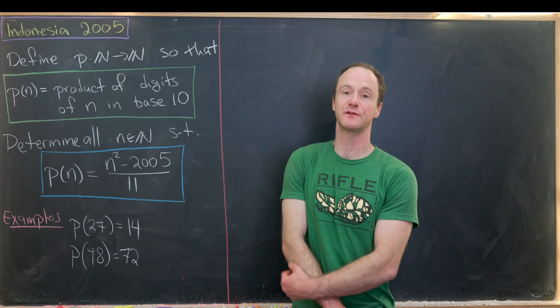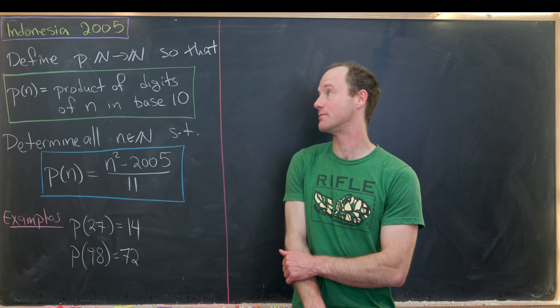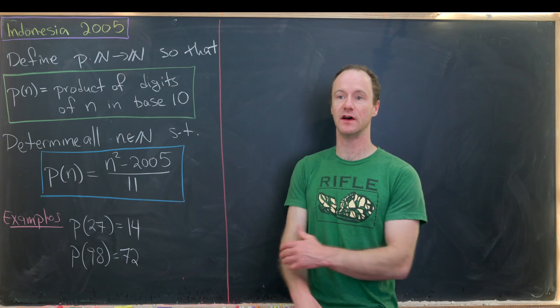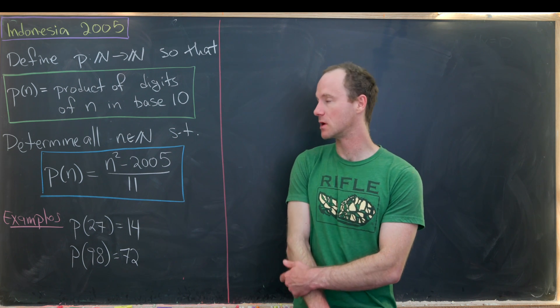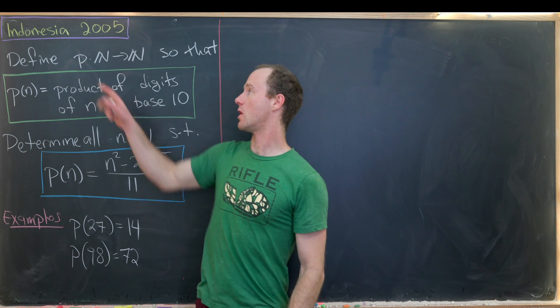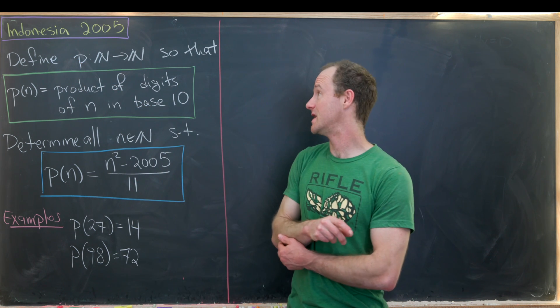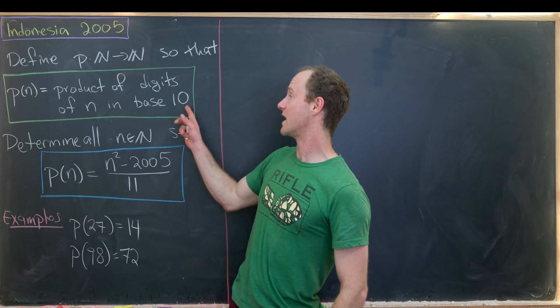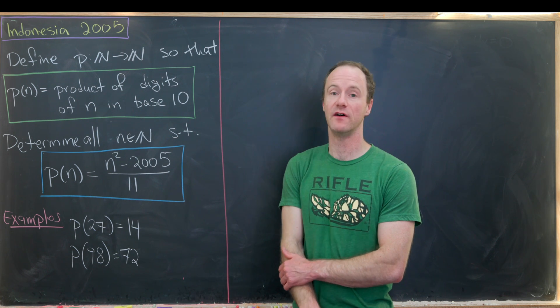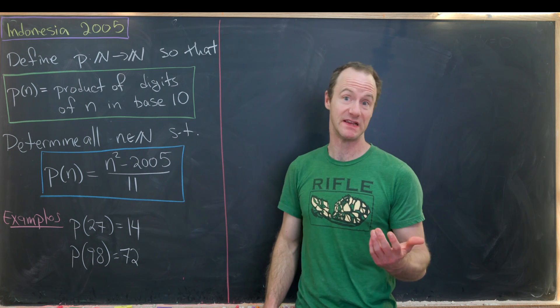Today we've got a nice problem which comes from a 2005 Indonesian math contest and it has to do with taking the product of digits of a natural number. So let's see what we have. We want to define a function which we'll call p from n to n by the rule that p evaluated at n is the product of the digits of n base 10.